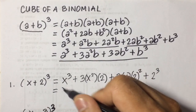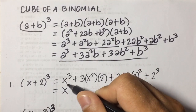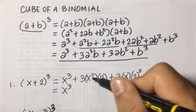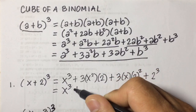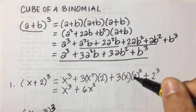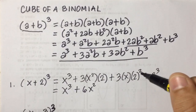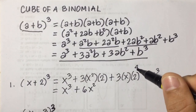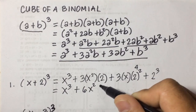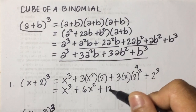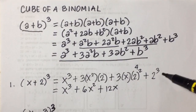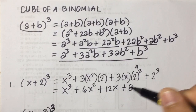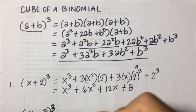Operating on this: we get x cubed, then 3 times 2 is 6, so 6x squared. Then 2 squared is 4, and 4 times 3 is 12, so 12x. Then 2 cubed is 8. So the answer is x cubed plus 6x squared plus 12x plus 8.